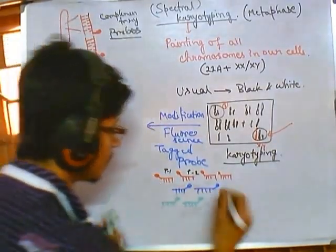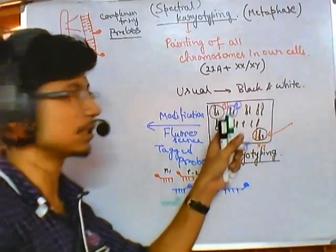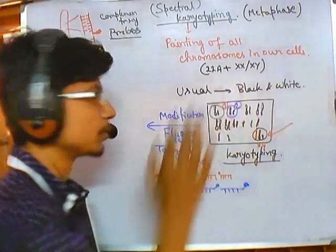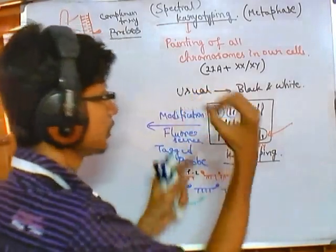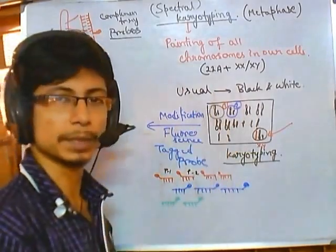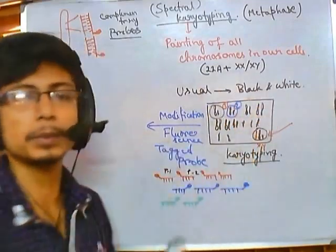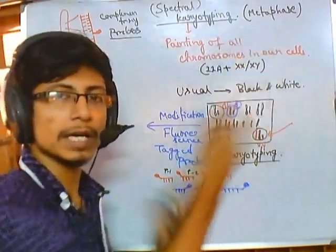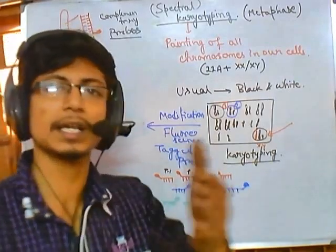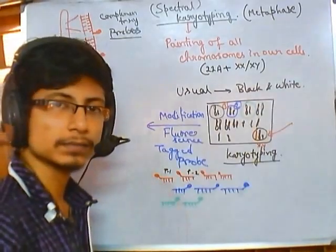When we look through the fluorescence microscope, the red color regions will be chromosome number one, the blue color will be chromosome number two, the green color is chromosome number three, and so on. We can actually mark different chromosomes with different colors. Previously it was a black-and-white painting of chromosomes, now it is a color painting. The designation is pretty easy — yes, this is chromosome one, two, and so on — we can designate them with different colors.